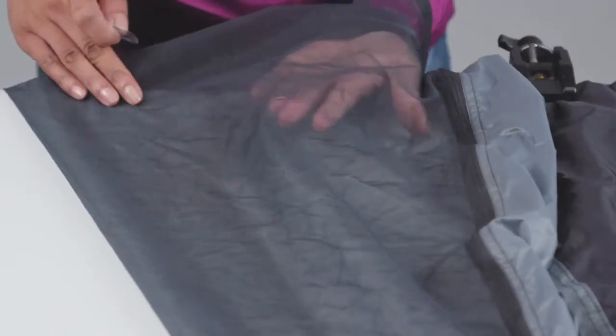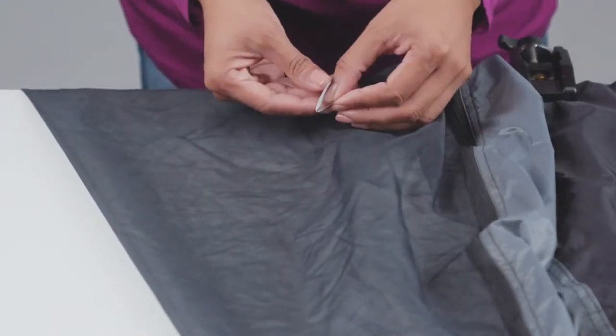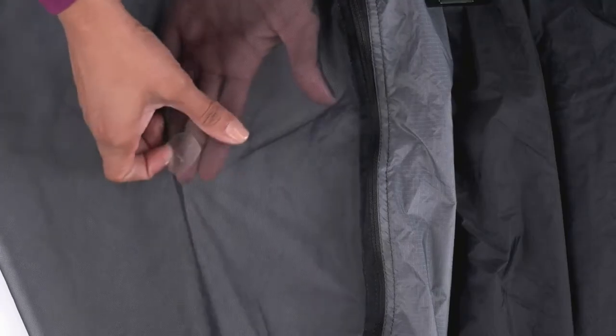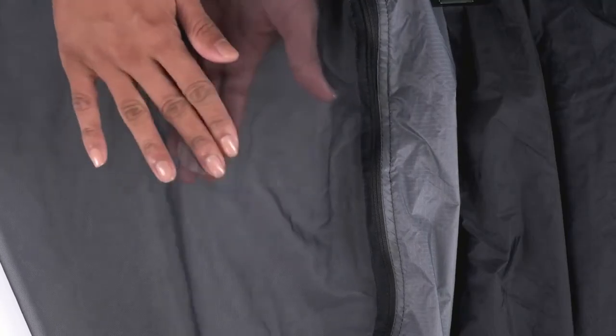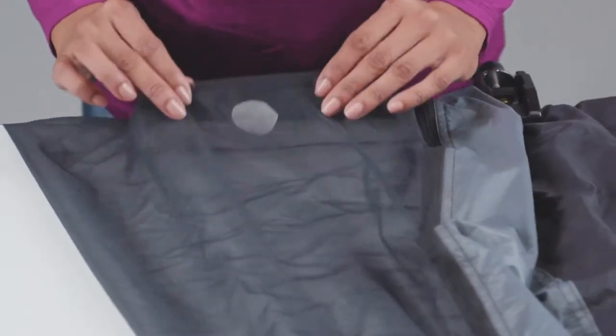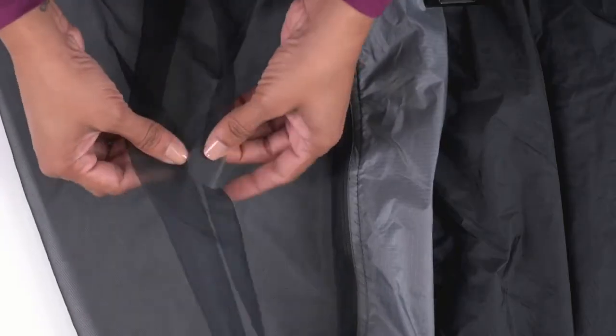For a quick repair to bug mesh or other small fabric tear, simply peel and stick a Tenacious Tape patch. These ultra-strong patches are nearly invisible, won't peel back over time, and can even be washed.